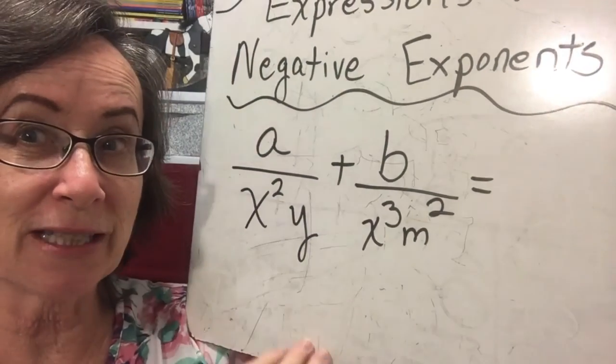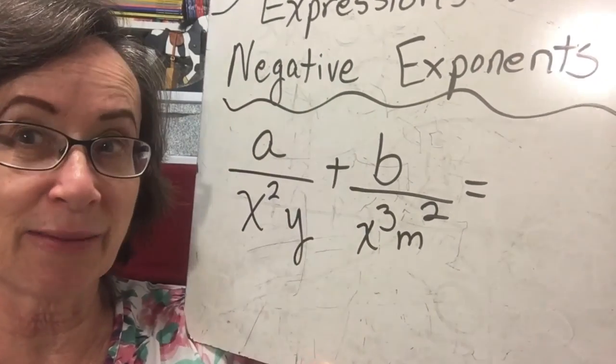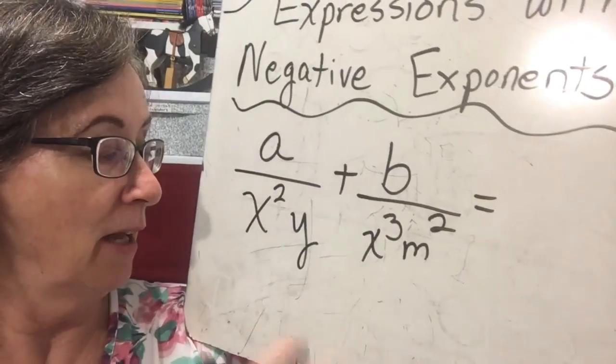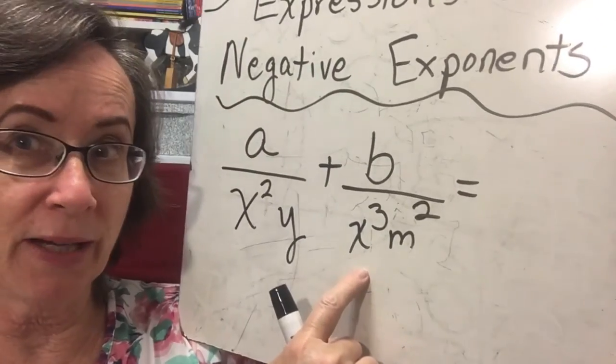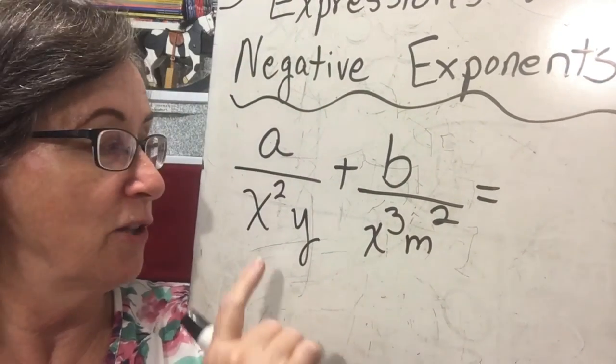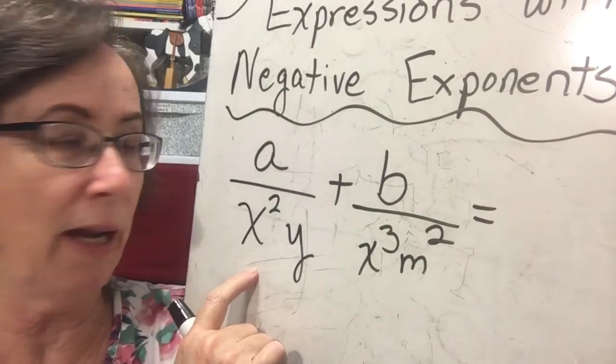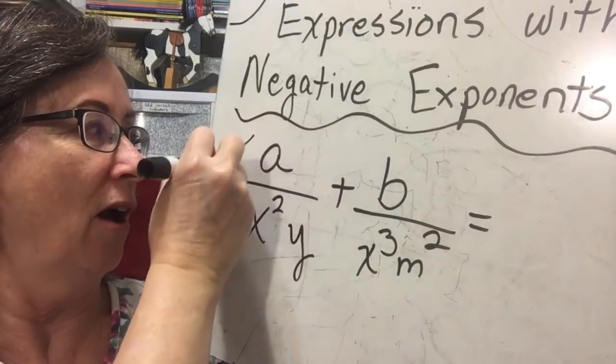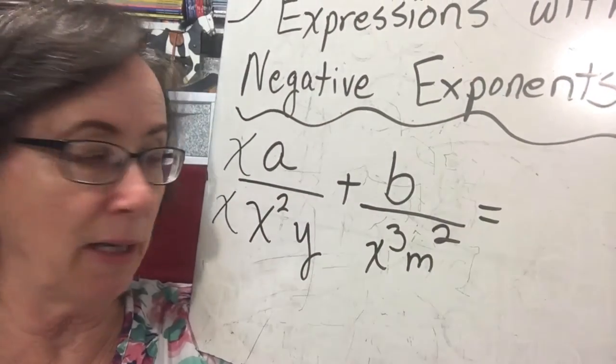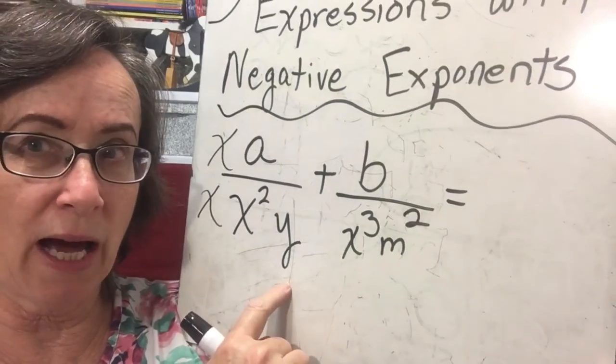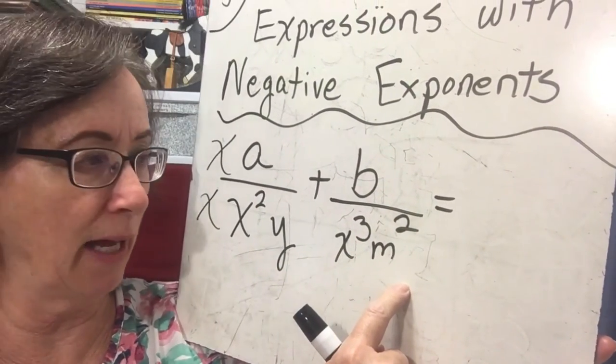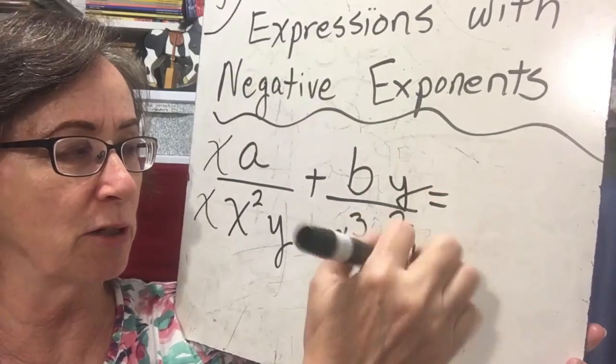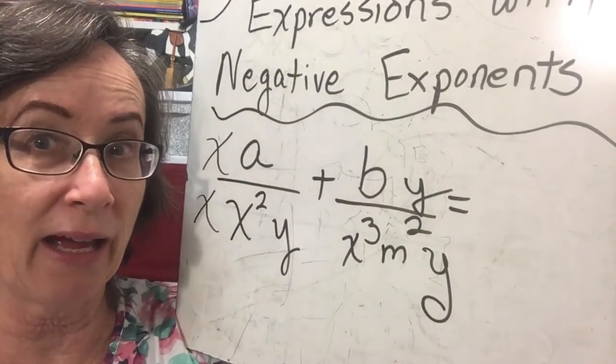Anytime we have two different denominators, and we're trying to add some fractions together, don't we have to get a common denominator? Well, here we've got an x squared, but over here we have an x cubed. So we can make that an x squared just by multiplying by another x on the numerator and the denominator. Well, this one has a y, but this one does not have a y. So we can make them common denominators by multiplying this one by y over y.